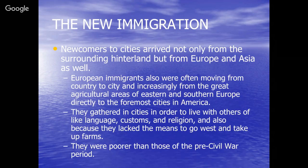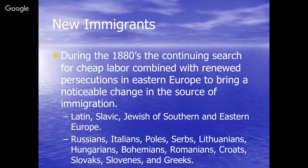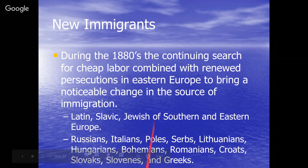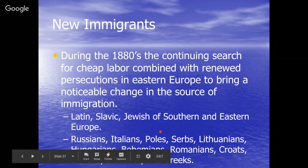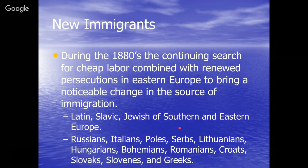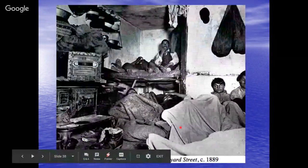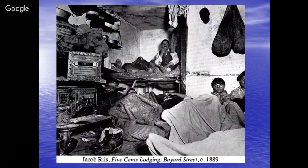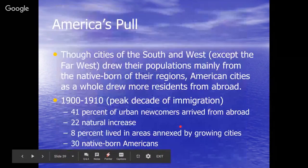New immigrants were attracted, recruited, and let in primarily for their cheap labor, despite all the nativism. They came from many different backgrounds — Latin, Slavic, and Jewish backgrounds of southern and eastern Europe: Russians, Italians, Poles, Serbs, Lithuanians (featured in The Jungle), Hungarians, Bohemians, Romanians, Croats, Slovaks, Slovenians, and Greeks. They piled into those dumbbell tenements on top of one another and languished in absolute poverty.